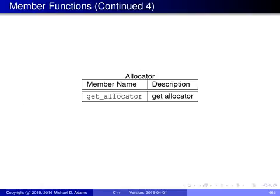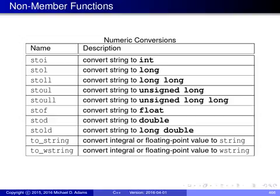Finally, the last group of member functions relates to allocators. The get_allocator() member function simply returns the allocator that performs memory allocation for the string object.